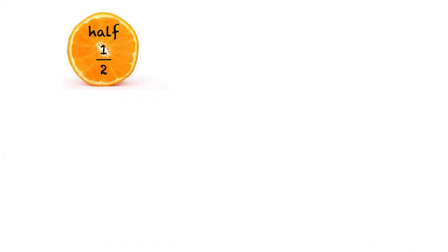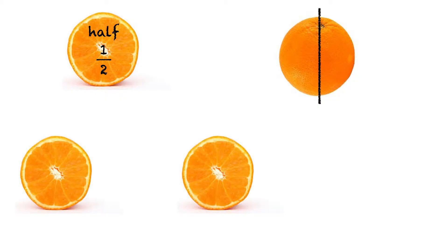This is half an orange. Let's cut this whole orange into two halves. We have to cut it right down the middle to make sure the pieces are the same size. Now we have two halves.